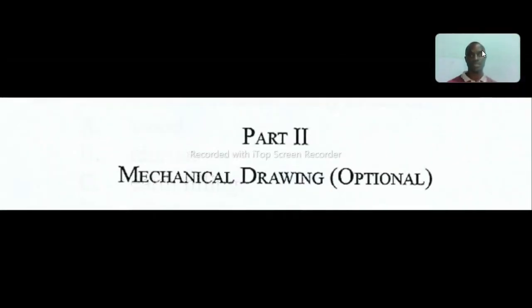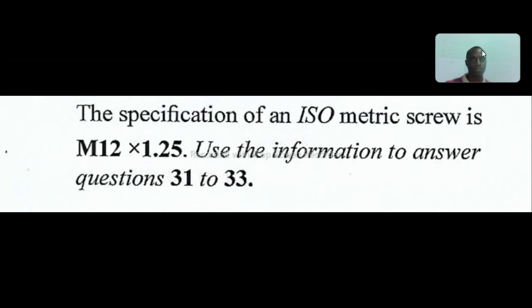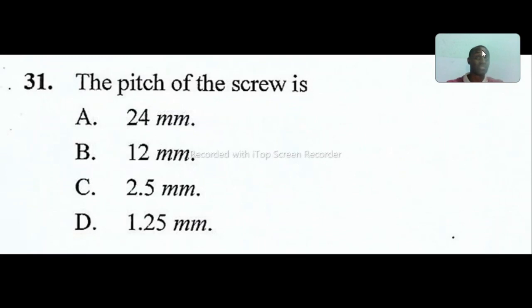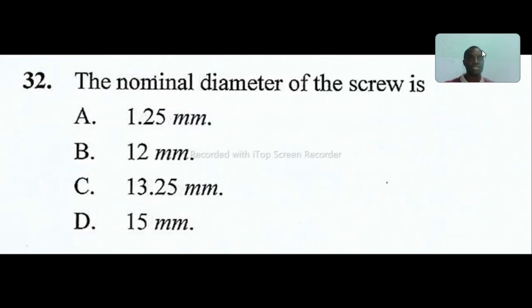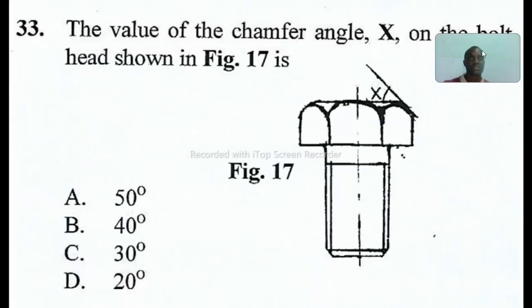The second part of our section is mechanical drawing. The specification of an isometric screw is given, use the information to answer these questions. Question forty-one: the pitch of the screw, which is the distance between one top level of the screw thread to the next, is 2 mm. The diameter is B, 12 millimeters. Question forty-two: the value of the chamfer angle X on the bolt shown in figure seventeen is 30 degrees.